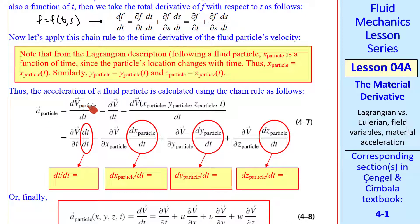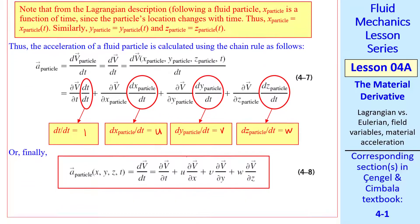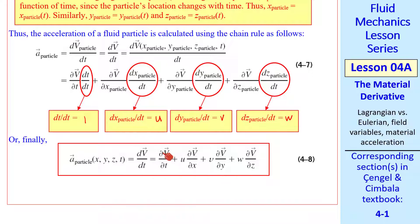The acceleration of a particle is dv_particle/dt, and v itself is a function of x, y, and z of the particle and time. Using the chain rule, dv_particle/dt is (∂v/∂t)(dt/dt) plus (∂v/∂x_particle)(dx_particle/dt) plus similar terms for y and z. Since dt/dt is just one, dx_particle/dt is the x component of velocity u, dy_particle/dt is v, and dz_particle/dt is w. So the acceleration of a fluid particle reduces to ∂v/∂t plus u(∂v/∂x) plus v(∂v/∂y) plus w(∂v/∂z).